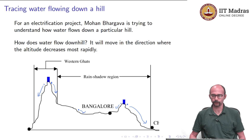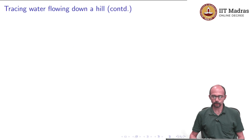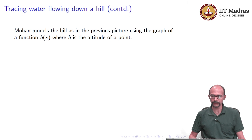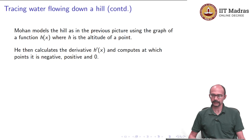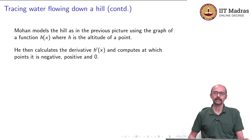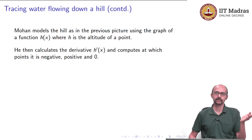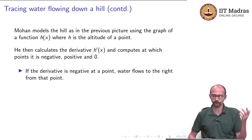Mohan Bhargava models the hill using a function h of x, where h is the altitude. He calculates the derivative h prime of x and computes at which points it is negative, positive, and zero. This captures the direction in which altitude decreases most rapidly: if the derivative is negative, the water flows to the right from that point.